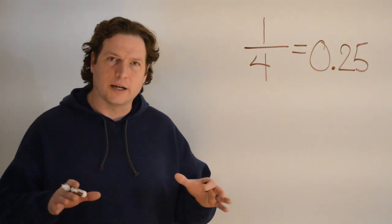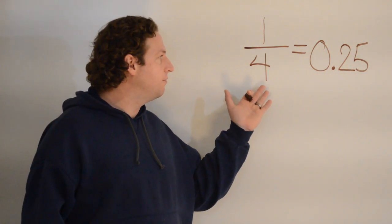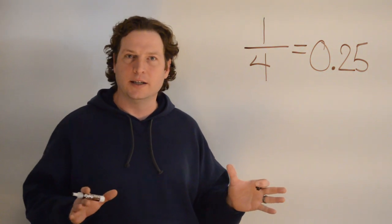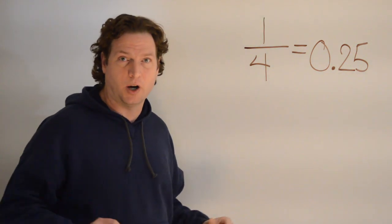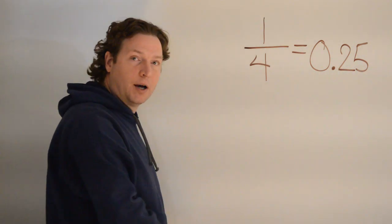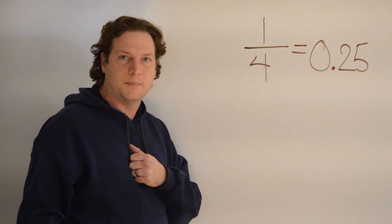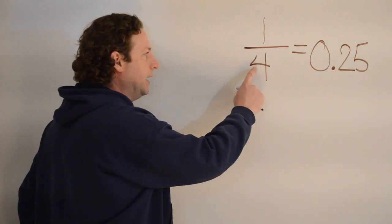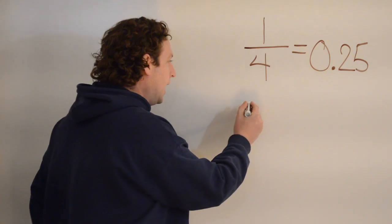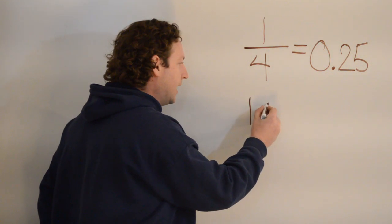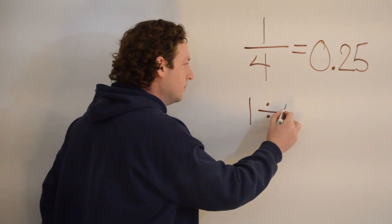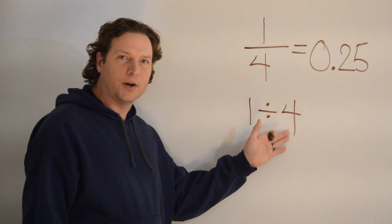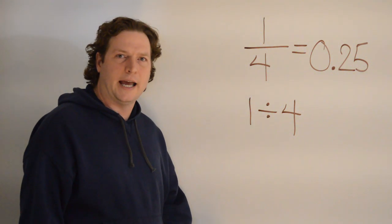Okay. You might be wondering, how do we just know that one-fourth equals zero point two five? Well, any fraction is actually just a division problem, where we take the top number, or the numerator, and we divide it by the bottom number, the denominator. So, this really reads one divided by four. So, I could rewrite this fraction as a division problem. It looks a little strange because we're not used to dividing by a bigger number. Let's see how we do that in the calculator.